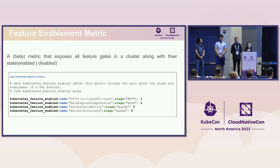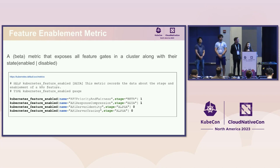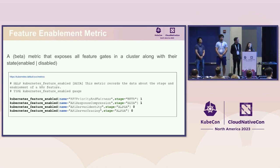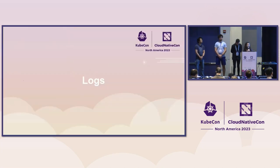We have also introduced a beta level metric called the feature enablement metric, which exposes all the feature gates that exist in the Kubernetes version your cluster is currently using, and it tells you whether each feature is enabled or disabled at a given point in time. In the example, you can see that API priority and fairness — a beta feature — is enabled in the cluster, but API server identity — an alpha feature — is currently disabled.